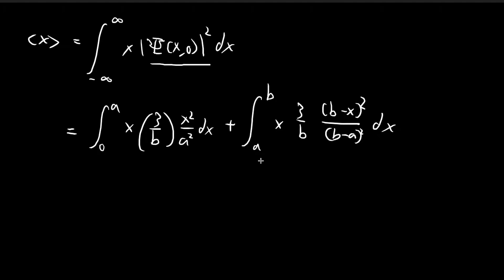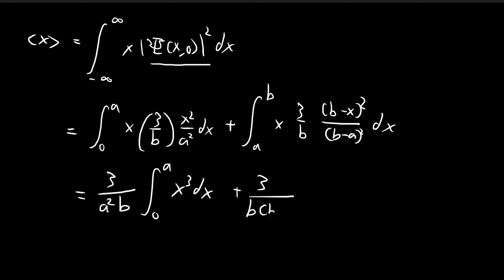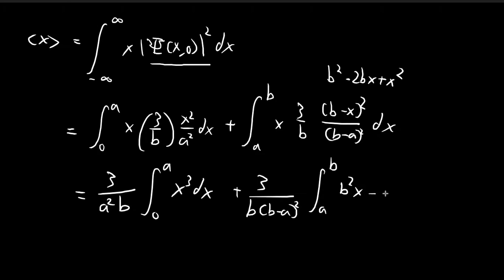We need to focus on these two integrals. Pulling the constants out, we have an integral of x to the power of 3. For the second integral, the constants are 3 over b times (b minus a) squared. We expand (b minus x) squared as b squared minus 2bx plus x squared, and multiplying by x gives b squared x minus 2bx squared plus x to the power of 3, dx.